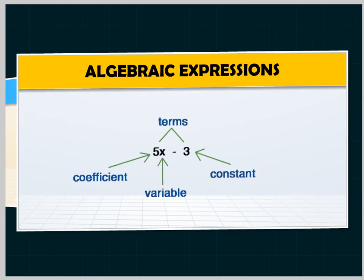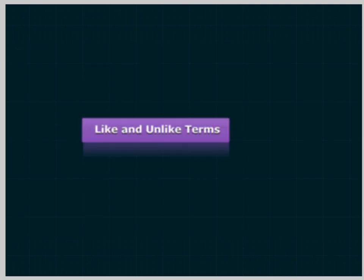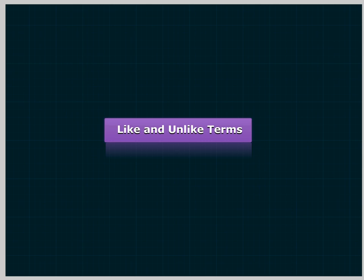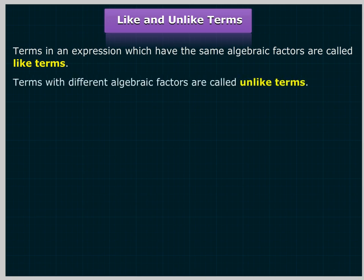Chapter 12: Algebraic Expressions. Like and Unlike Terms. Terms in an expression which have the same algebraic factors are called like terms. Terms with different algebraic factors are called unlike terms.